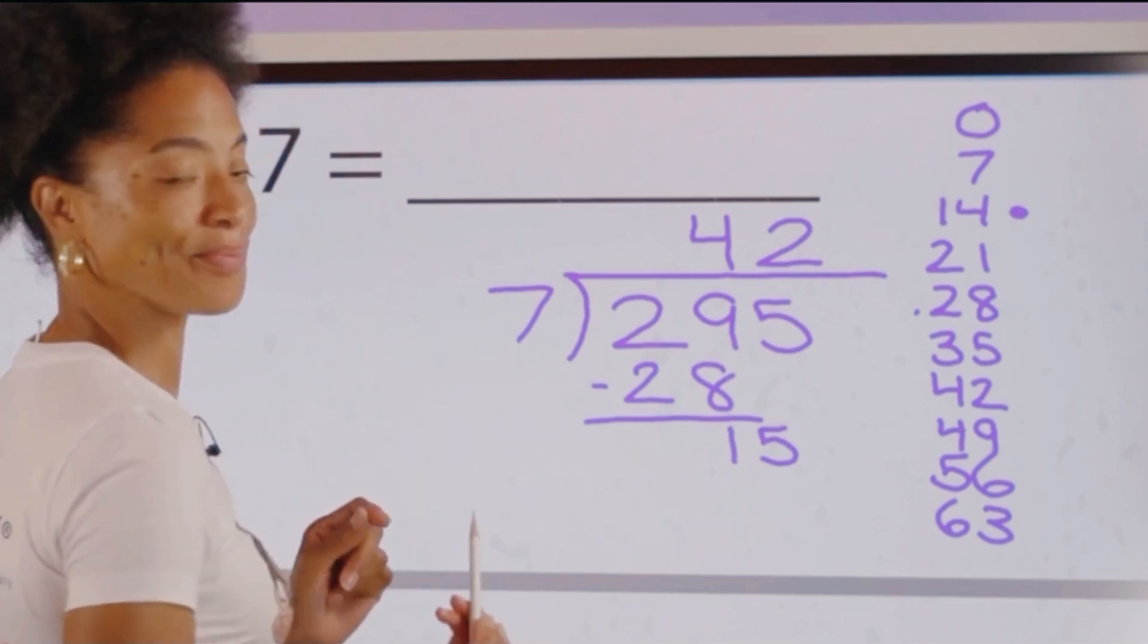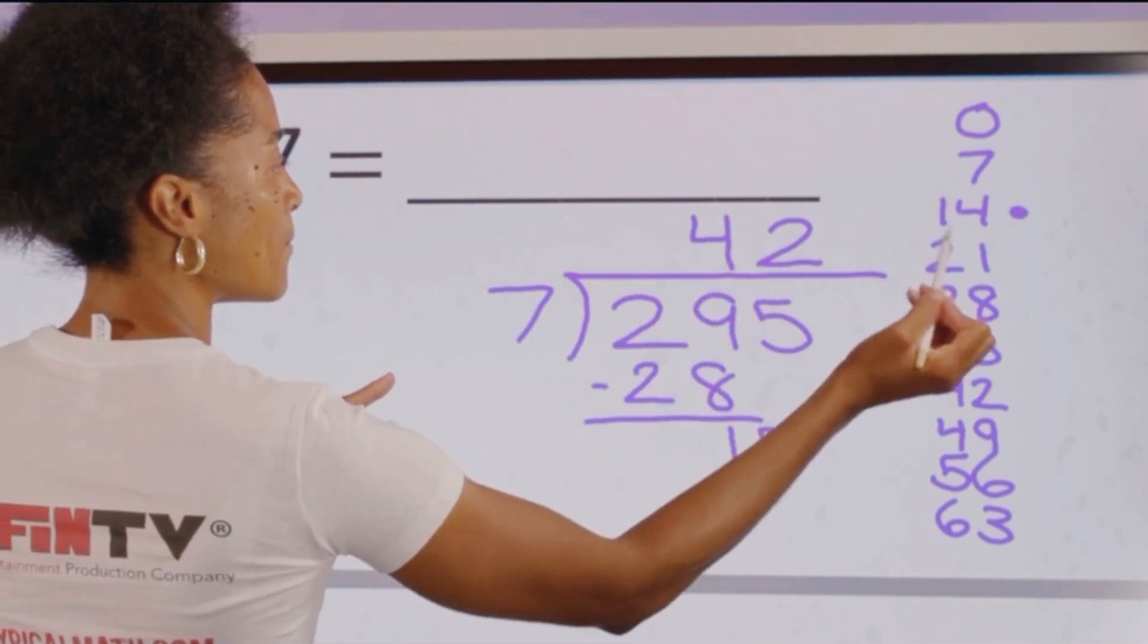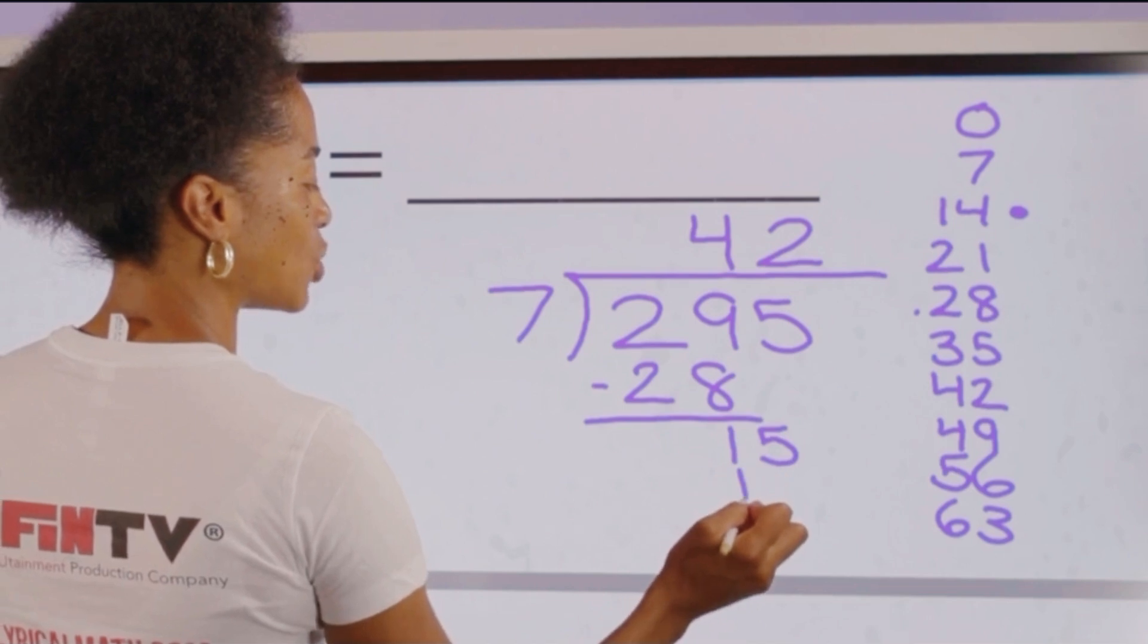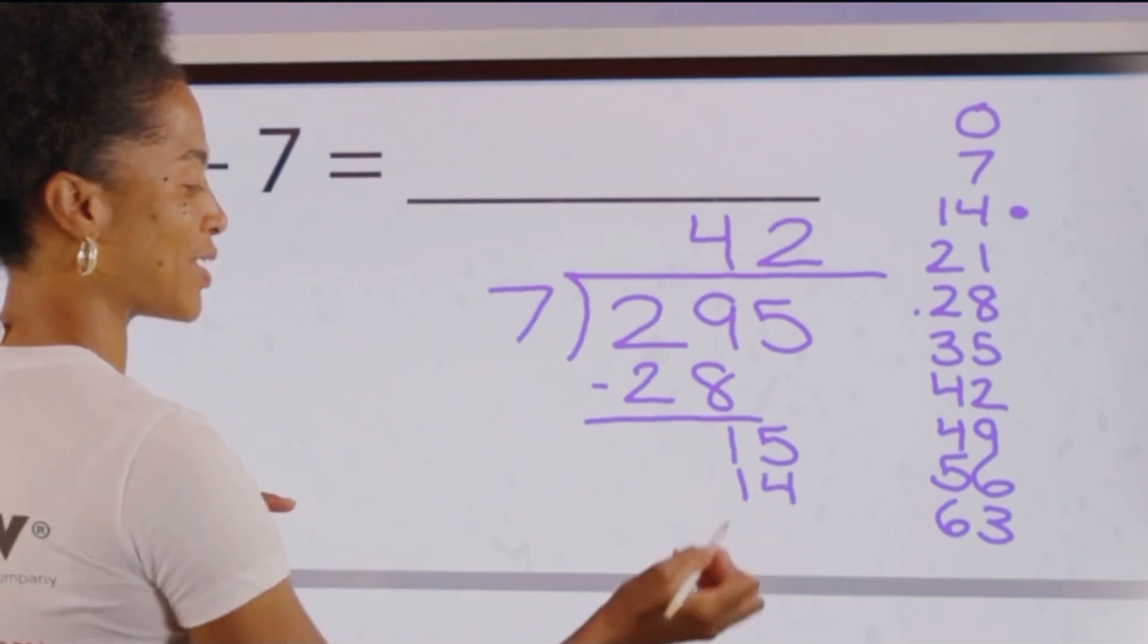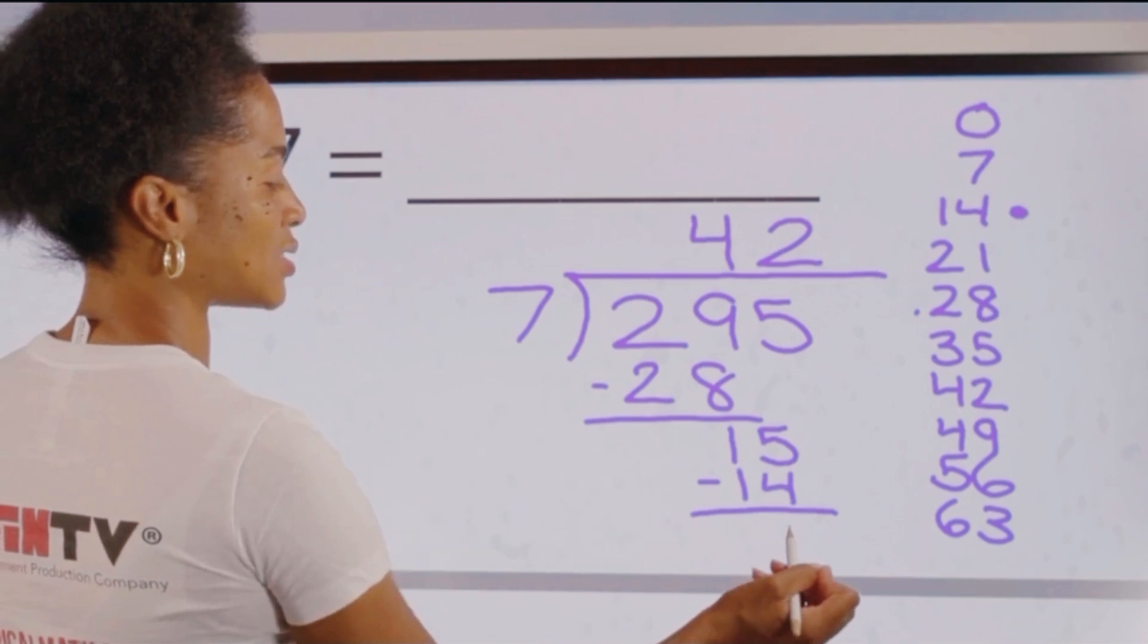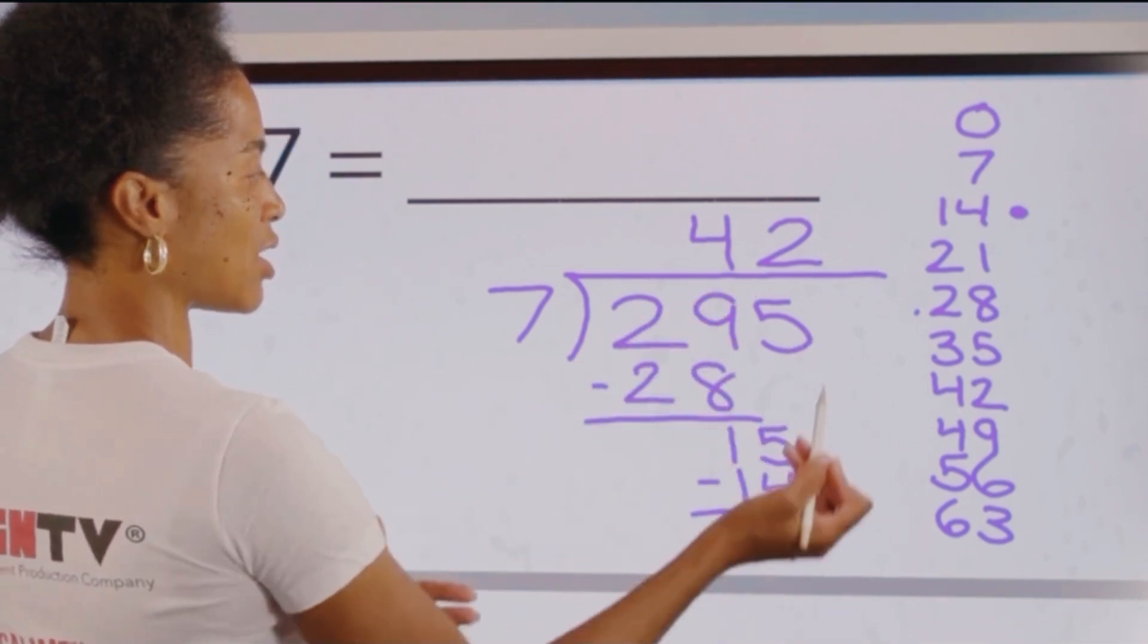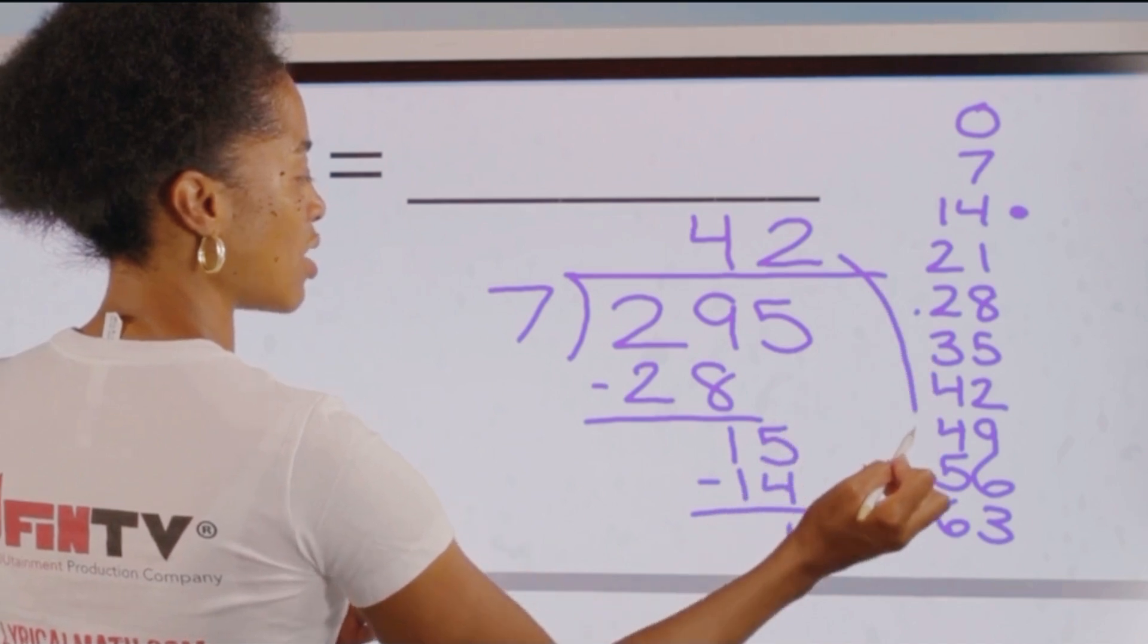Multiply 2 times 7, that gives us the number we stopped at, 14, at the bottom. Subtract 14 from 15 gives us 1. Bring down—there's nothing to bring down, so that tells us we are finished.